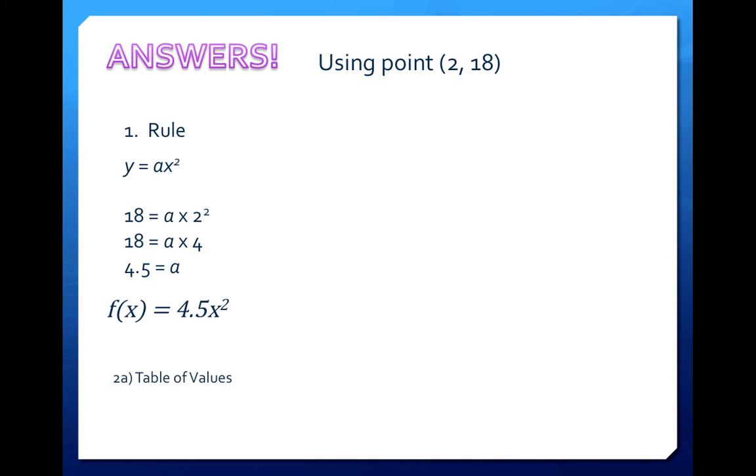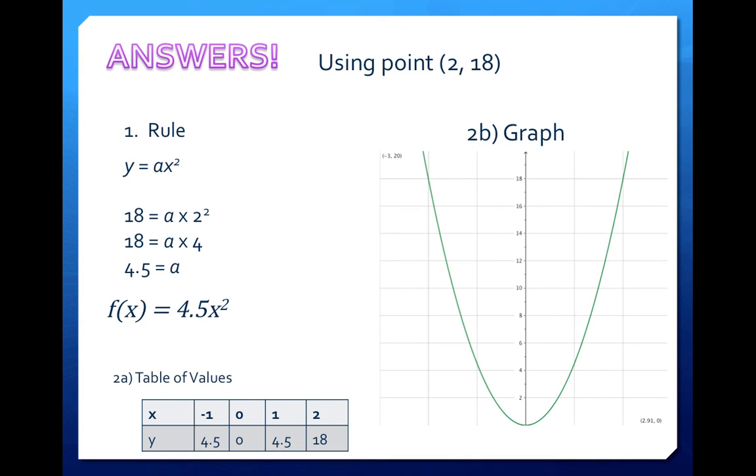Then when we want to graph it, I suggested that you do a table of values. So I chose my x coordinates as negative 1, 0, 1, and 2. This could give me a pretty good idea of where the points are on the graph so that I can properly draw a parabola. So in this case, when I plugged in negative 1, I got 4.5 as my y. When I plugged in 1, I got 4.5 as my y. And when I plugged in 2, I got 18. And my vertex is (0,0). And when I plot it, it should look something like this.